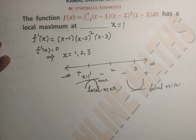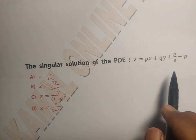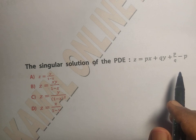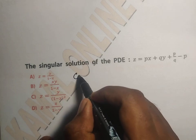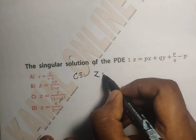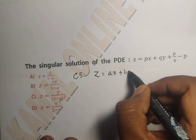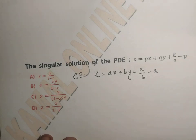Next question: The singular solution of the PDE z = px + qy + p/q - p. We use Clairaut's formula: set p = a and q = b to get the complete integral z = ax + by + a/b - a. Then partially differentiate with respect to a and b to find the singular solution.